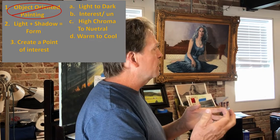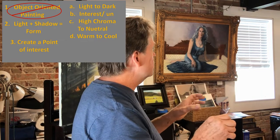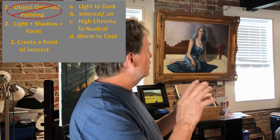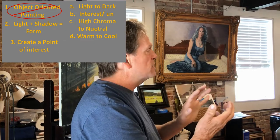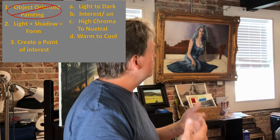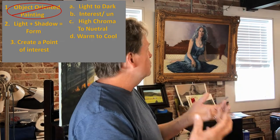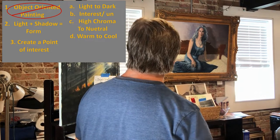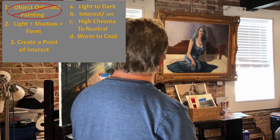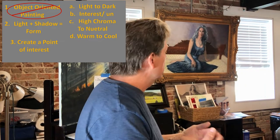Instead of thinking object-oriented, think about how light hits whatever it happens to be. Stop thinking about it being an object and start thinking about where am I seeing light? Where am I seeing color? Where am I seeing shadows? The combination of light and shadows together actually creates form. If you get caught up in details and a painting looks flat and two-dimensional, that's probably where the breakdown is. Move away from object-oriented and move into thinking about light, shadow, color, edges — all those concepts that are really important for painting.